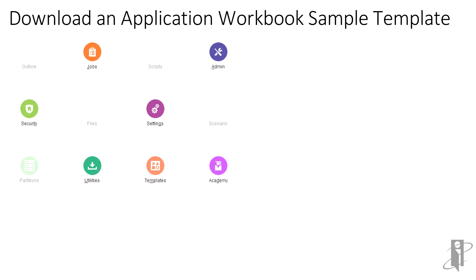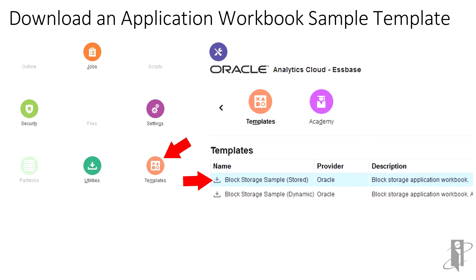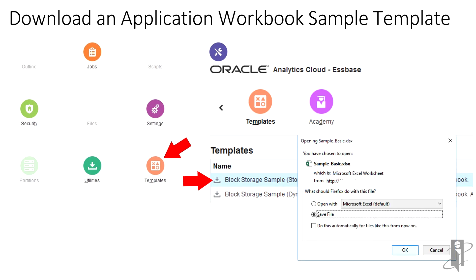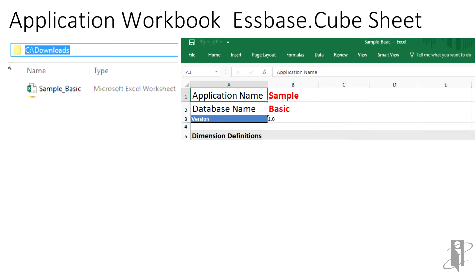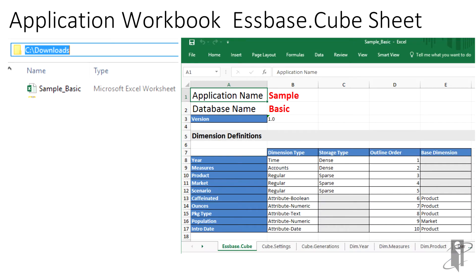To download a sample template, on the OAC home page click the Templates card. Click the download icon next to the template you want to download and click OK to save. The export will be saved as an Excel file and will automatically be named for the application and cube.